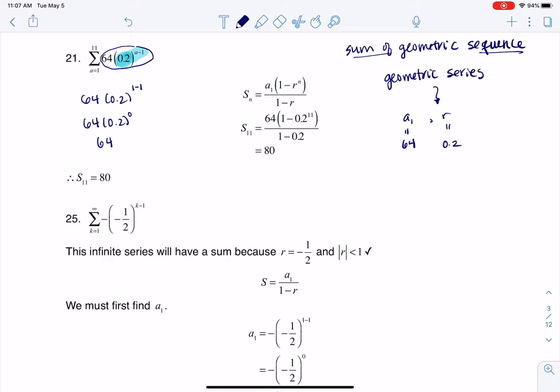And when I want to find a sum, in this case it's a partial sum, because if I look at the top index there, it says add 11 of these terms together. So if I want to find s sub 11,